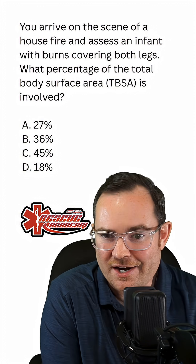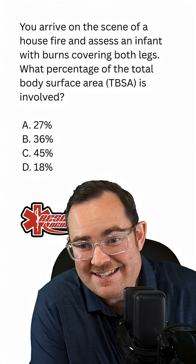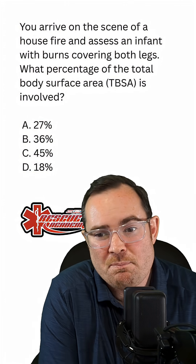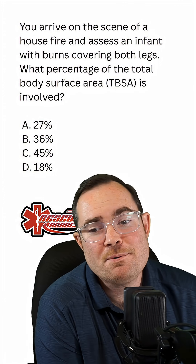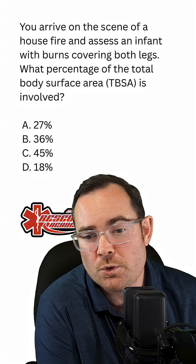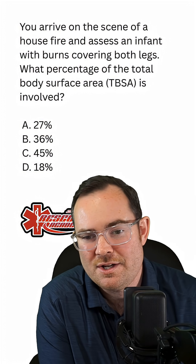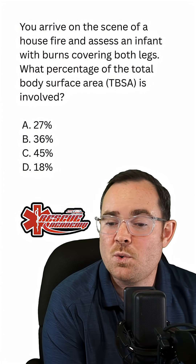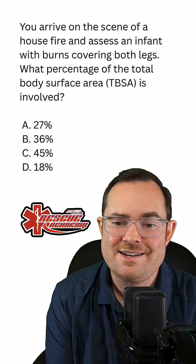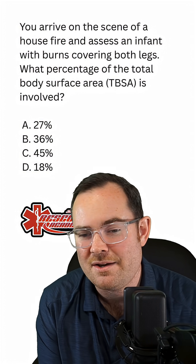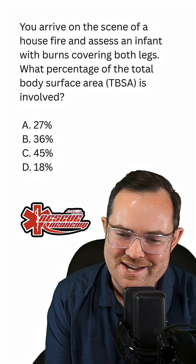We've just arrived on scene of a house fire and are assessing an infant with burns covering both legs. What percentage of total body surface area is involved? Would it be A, 27%; B, 36%; C, 45%; or D, 18%?